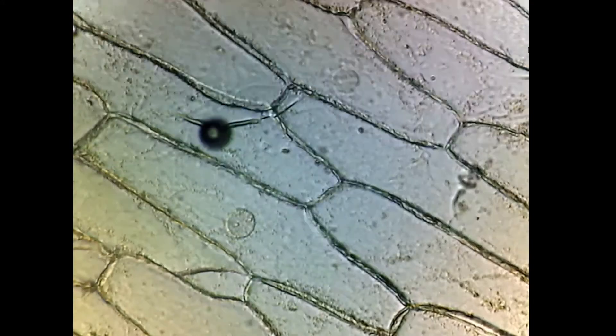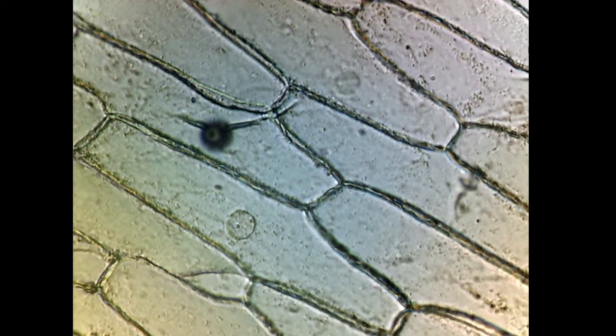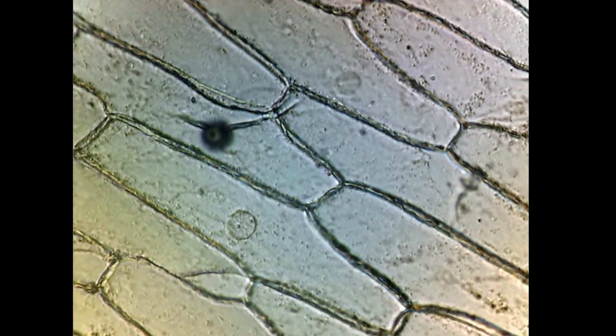And that is how onion cells look like under the microscope. I hope it was interesting and thanks for watching. See you next time. Bye.